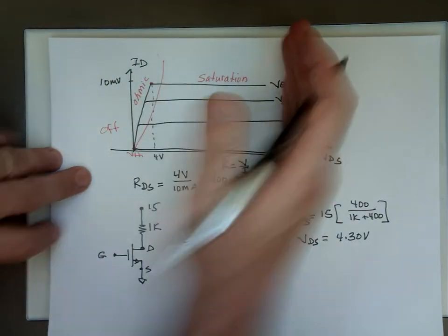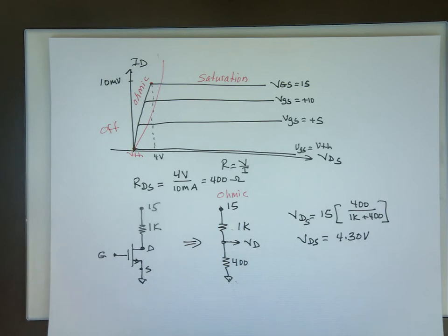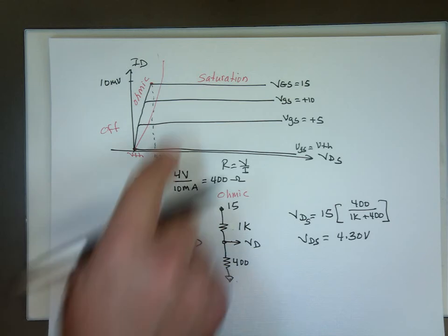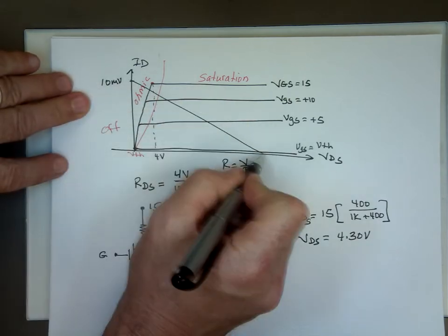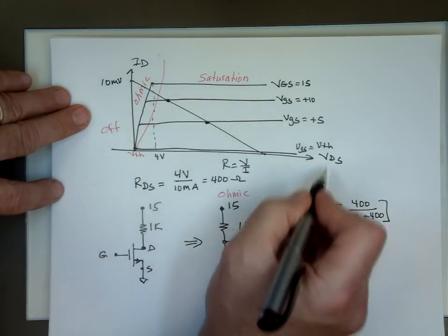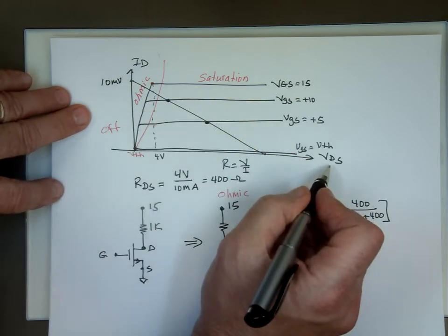But if you're in the saturation mode, then that MOSFET is not going to behave as a linear circuit. Notice it looks like a flat, it looks like a constant value, which means it's going to react like a current source, and it depends on which one of these values we're operating on.